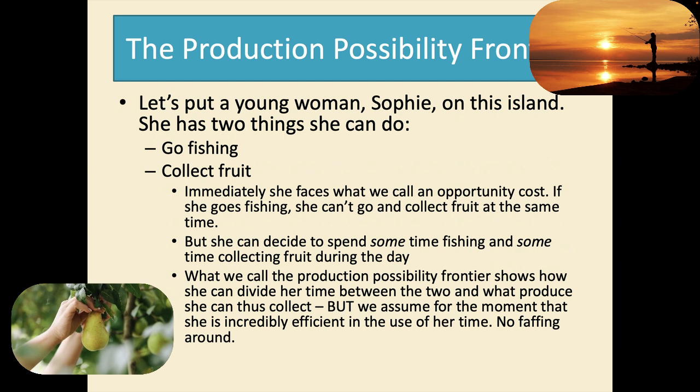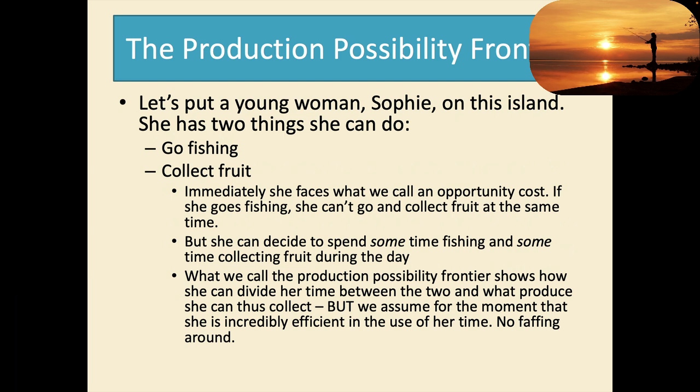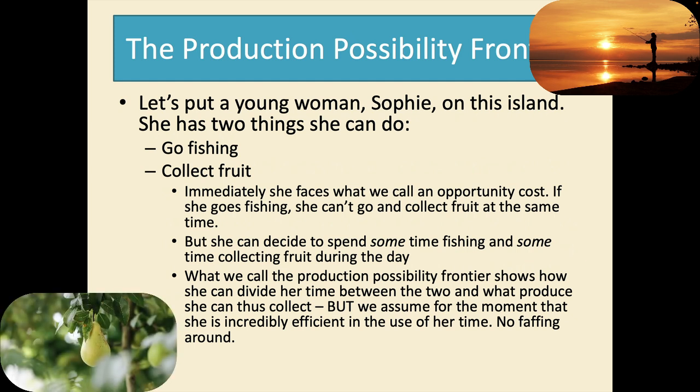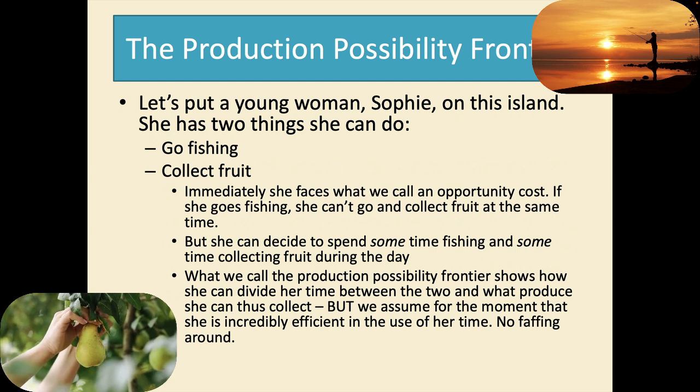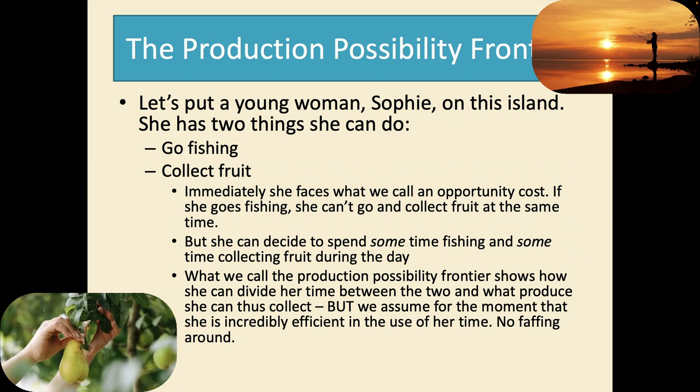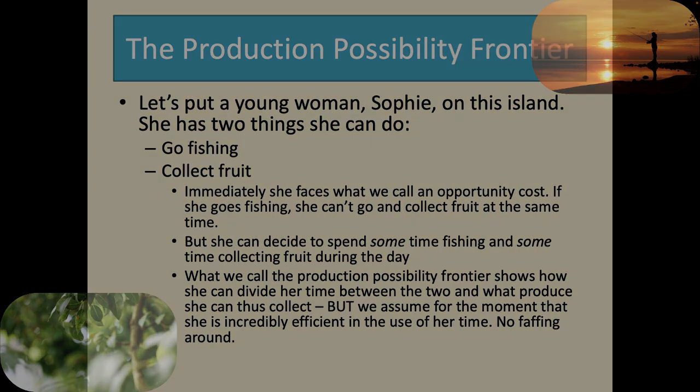Now immediately she faces what we call an opportunity cost. If she goes fishing she can't go and collect fruit at the same time. But she can decide to spend some time fishing and some time collecting fruit during the day. What we call the production possibility frontier, which we're just about to draw, shows how she can divide her time between the two and what produce she can thus collect. But we're going to assume for the moment that she's incredibly efficient in the use of her time. No faffing around with Sophie.